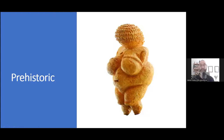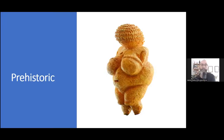Here we have a very famous statue, also very small, made of clay — the Venus of Willendorf. This is from 32 to 30,000 BP, so around 30,000 years old. This would have been one of the first human forms found as such, and there's been a series of these found all across Europe, going through the south of France all the way up to the Baltic.